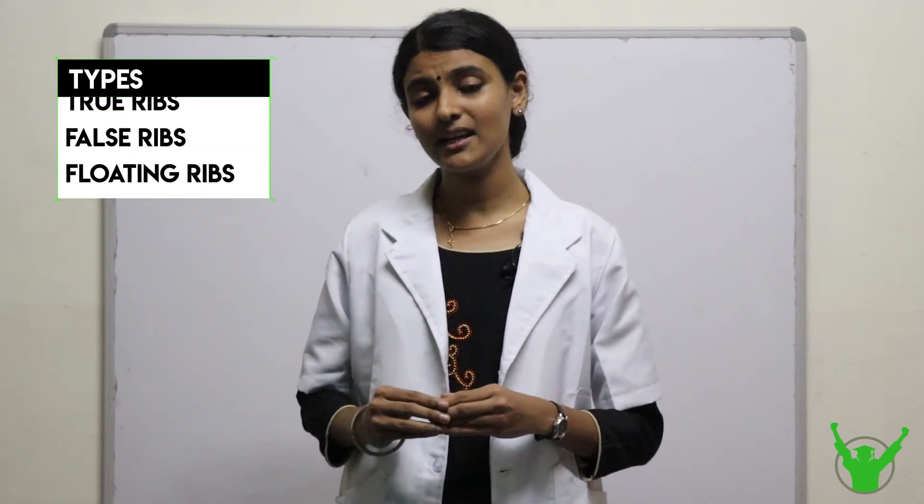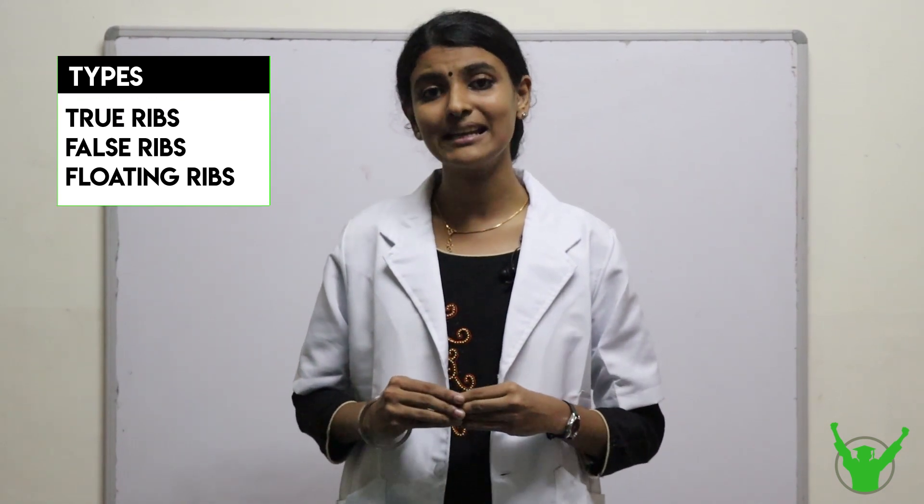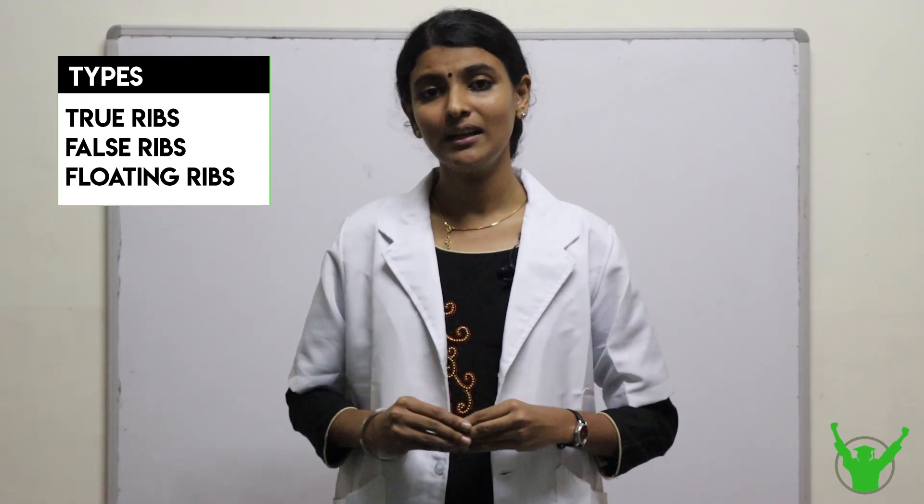The next basis of classification is the attachment to the sternum. The 1st to 7th ribs are called vertebrosternal ribs, because they are attached posteriorly to the vertebrae and anteriorly to the sternum. The 8th to 10th ribs are called the false ribs or vertebrochondrosternal ribs, as they are attached posteriorly to the vertebrae and anteriorly to the cartilage of the higher rib. The 11th and 12th ribs are called the floating ribs, which are attached posteriorly only and do not have any anterior attachments.